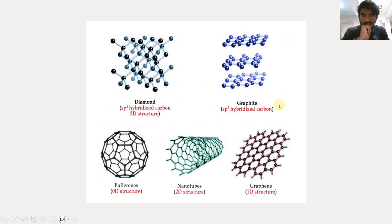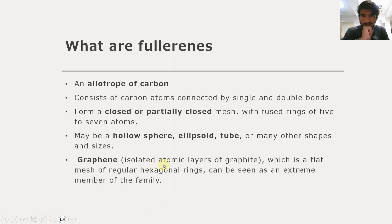These are the different allotropes of carbon: diamond, graphite, fullerene, nanotube, and graphene. The nanotube is a type of fullerene, whereas graphene is the isolated atomic layer of graphite.